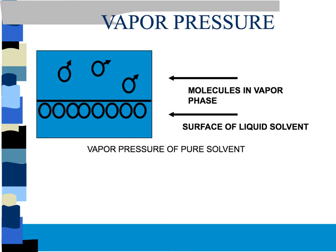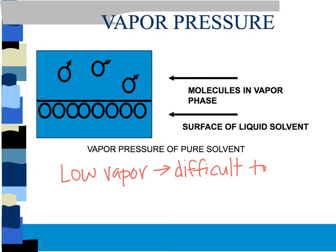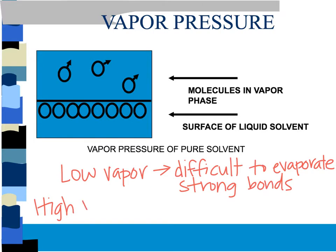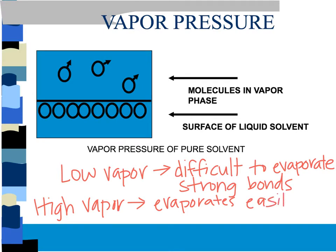If we say something has a low vapor pressure, that means it does not evaporate easily — it's more difficult to evaporate. Low vapor pressure corresponds to difficult to evaporate, which means it has strong bonds or attractive forces. If something has a high vapor pressure, it's the opposite — it evaporates very easily because the bonds are weak.